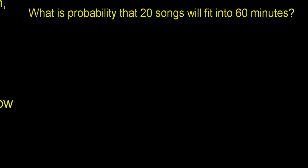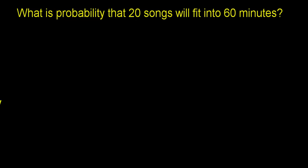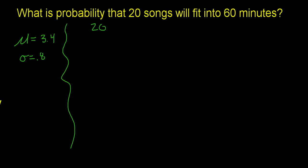Here's a more complex question: what is the probability that 20 songs will fit into 60 minutes? One song averages 3.4 minutes, so 20 songs should take 3.4 times 20 equals 68 total minutes. That means fitting 20 songs into 60 minutes is probably going to be on the low side — but let's find the actual probability.